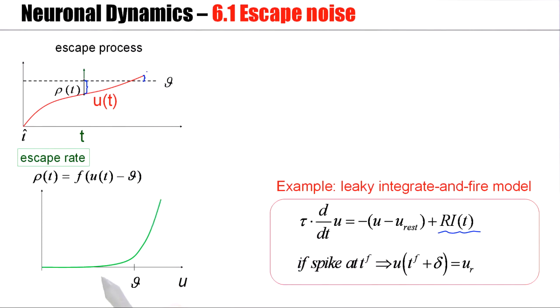As the membrane potential U approaches the threshold, this instantaneous escape rate increases. While it's below threshold, there's a small rate of firing. If it's above threshold, this escape rate grows rapidly.